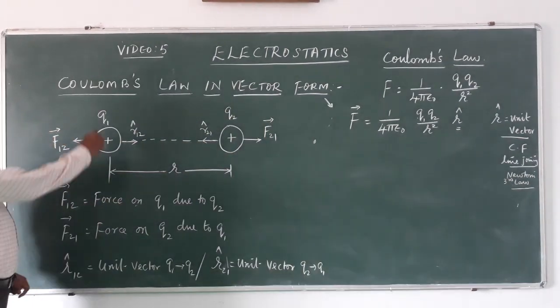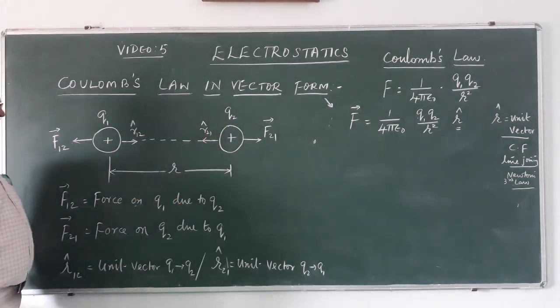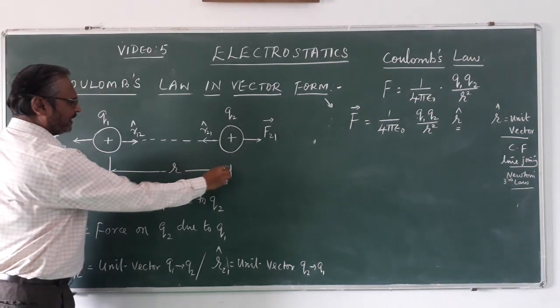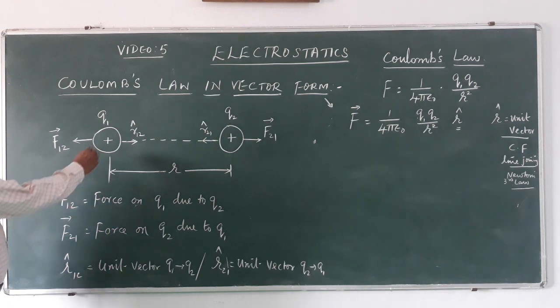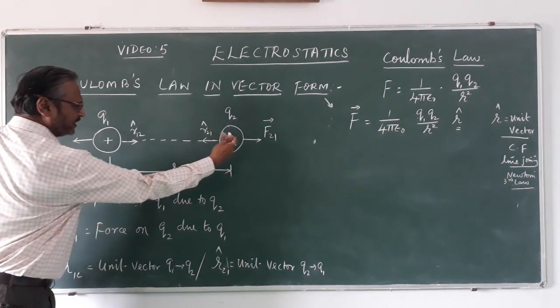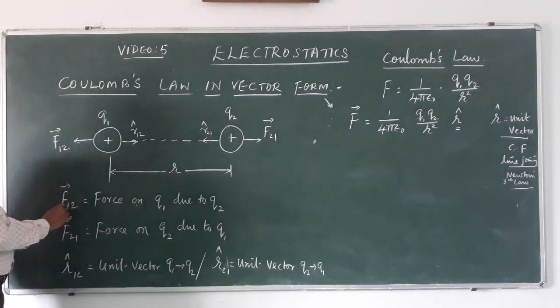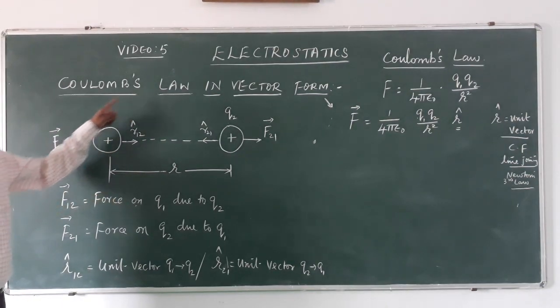Now let us look at the two charges q₁ and q₂. They both are positive charges. Distance of separation is r. Naturally there is going to be a repulsive force. Let us say force on the first charge due to the second charge. F₁₂ is the force on q₁ due to q₂.